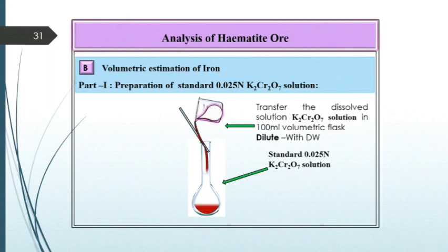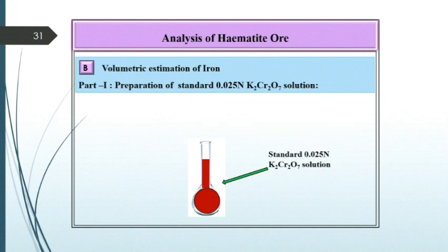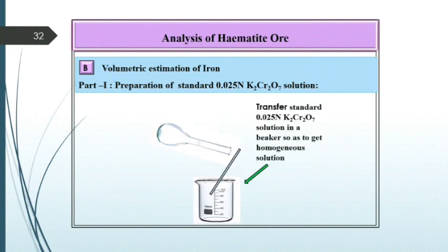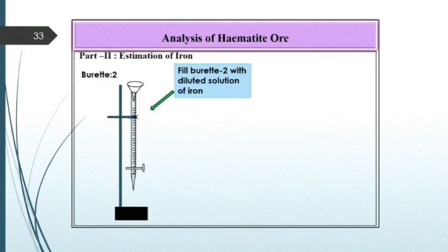Transfer this K2Cr2O7 solution in a clean and dry 100 ml volumetric flask and dilute it with distilled water. Now transfer this prepared 0.025 normal K2Cr2O7 solution in a clean and dry beaker so as to get a homogeneous solution. So this is Part 1, preparation of standard solution of 0.025 normal K2Cr2O7 solution.